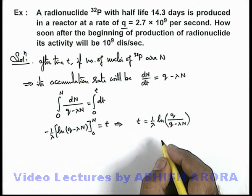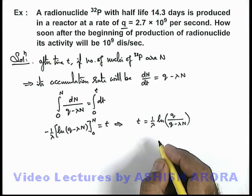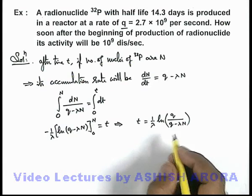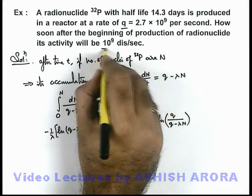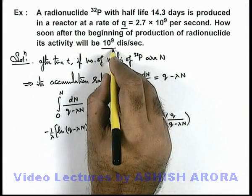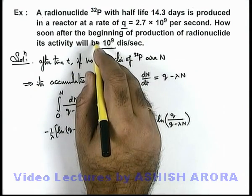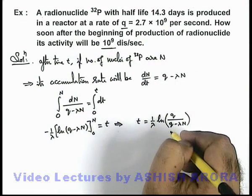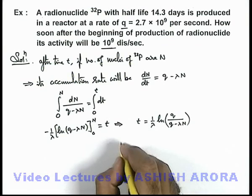In this situation, we're given that the activity is 10^9 disintegrations per second. We're required to find the time. If we substitute the values in this situation, we can see...